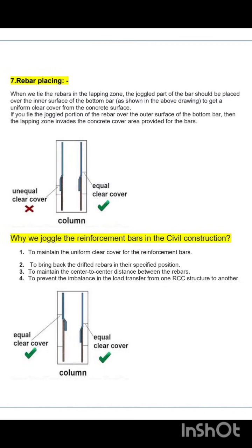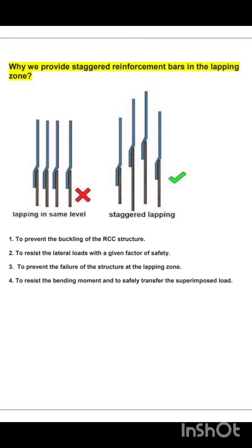Why do we provide staggered reinforcement bars in the lapping zone? In the figure you can see lapping at the same level versus staggered lapping. There are four reasons: first, to prevent the buckling of the RCC structure; second, to resist lateral loads with a given factor of safety; third, to prevent the failure of the structure at the lapping zone; and fourth, to resist the bending moment and safely transfer the superimposed load.